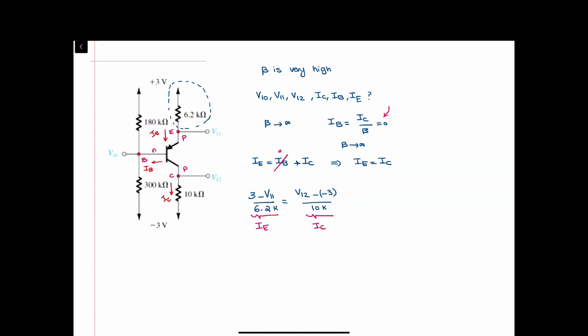Another thing we know for this PNP transistor is that VEB is given as 0.7 volts. Also, looking at the base of the circuit, the base voltage VB is equal to V10.